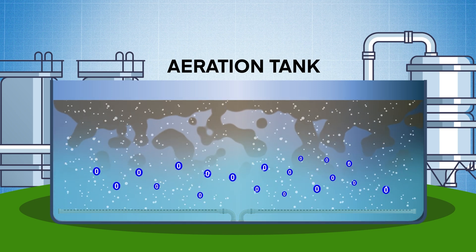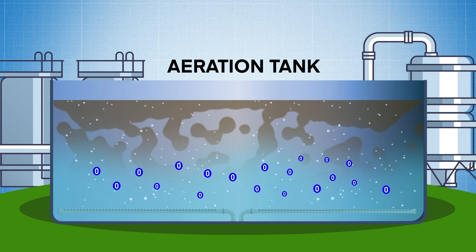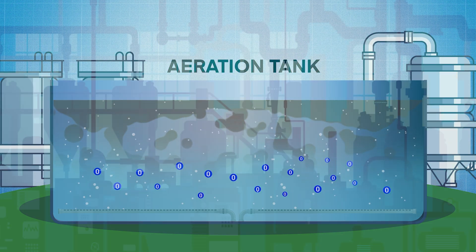By monitoring and controlling dissolved oxygen levels, treatment plants can manage aeration to ensure that only the necessary amount of oxygen is supplied, which helps to reduce energy consumption and operating costs.